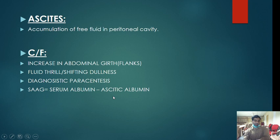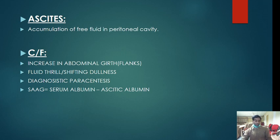Ascites is defined as accumulation of free fluid in the peritoneal cavity. Clinically, the patient has increased abdominal girth, usually in the flanks rather than the center. Shifting dullness is positive even if fluid is around 500 ml. Fluid thrill is positive if fluid is around 1500 ml. USG can detect as little as 300 ml.